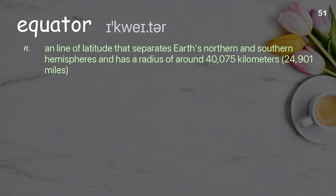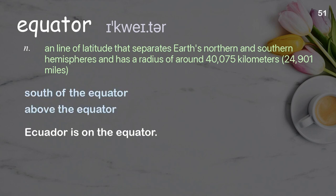Equator: a line of latitude that separates Earth's northern and southern hemispheres and has a radius of around 40,075 kilometers (24,901 miles). Examples: south of the equator, above the equator. Ecuador is on the equator.